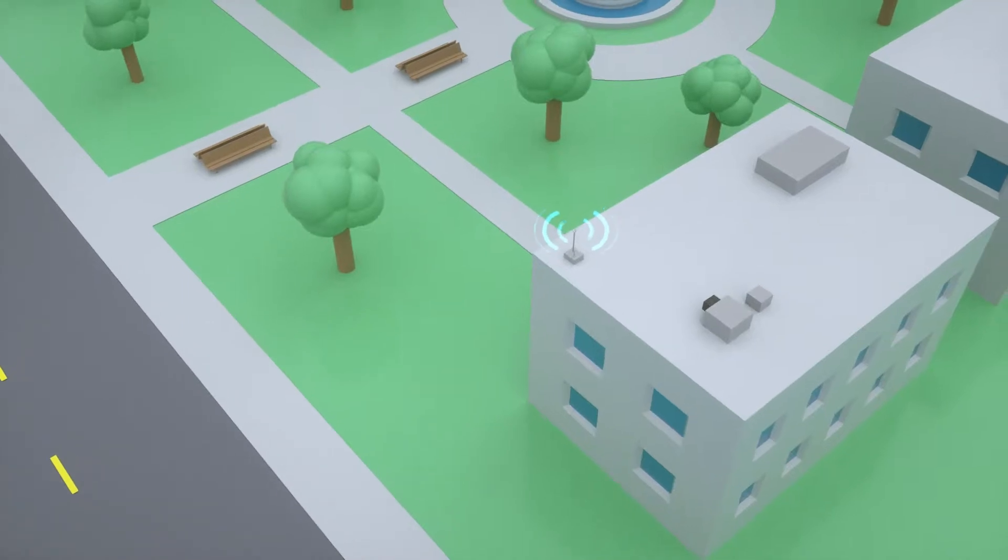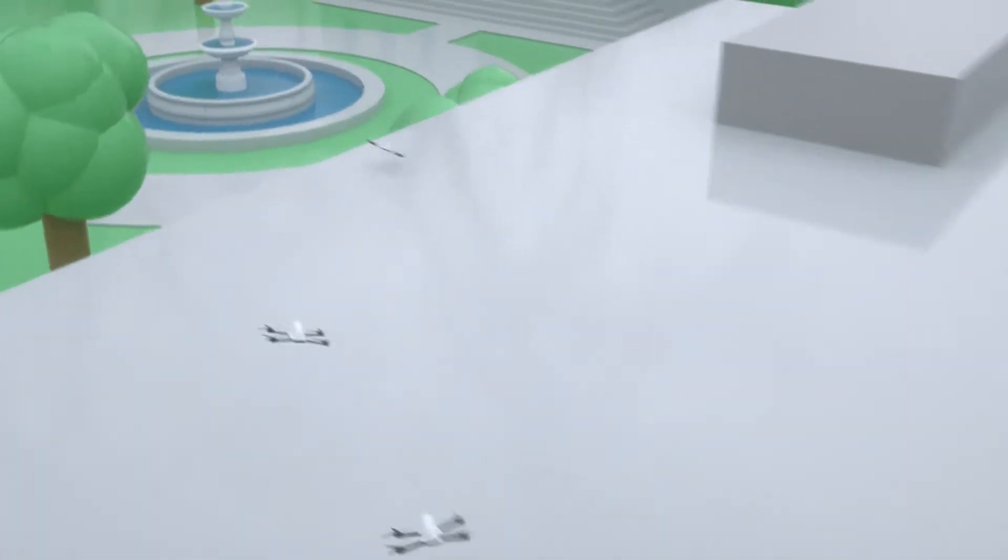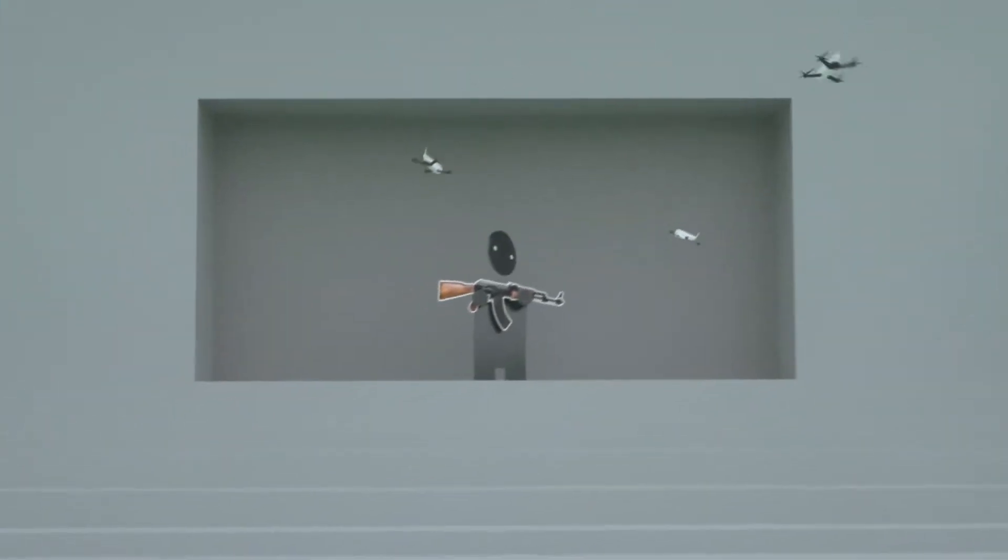An on-site gunshot detection system listens for gunfire. If shots are fired within range, a swarm of drones is released and sent to the shooter's location.